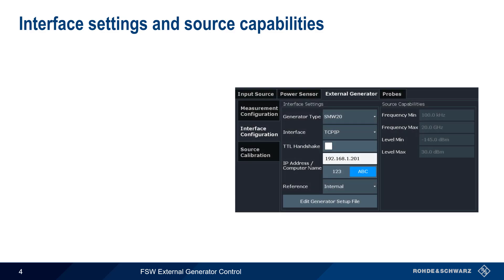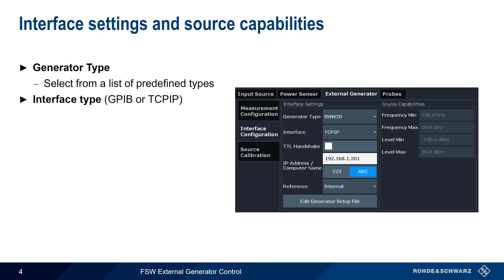We'll start with Interface Configuration. Here we select the type or model of generator from a list of predefined types. We also need to choose the interface used to connect the FSW to the generator. This can be either GPIB or TCPIP — that is, an Ethernet or LAN connection. The GPIB address, or the IP address/hostname, must also be entered.